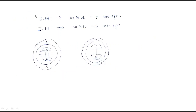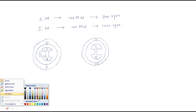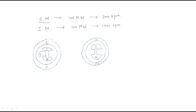Here we have a small comparison between the synchronous motor and induction motor. For example, if a synchronous motor is rated at 100 megawatts it will be loaded at only 300 RPM, whereas an induction motor of the same 100 megawatt rating will rotate at 1000 RPM. Comparing these two, the induction motor is generally preferable over the synchronous motor.